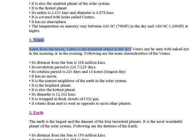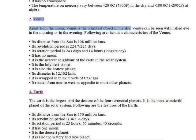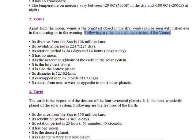Venus: Apart from the moon, Venus is the brightest object in the sky. Venus can be seen with the naked eye in the morning or in the evening. Its distance from the sun is 108 million km.